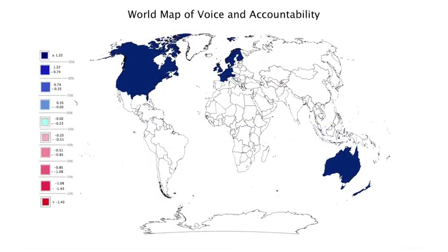The first decile are all Western states in Europe, North America and Australasia. Although the United States, Germany, France and the United Kingdom are all in this decile, the remainder is dominated by wealthy small and medium-sized states.